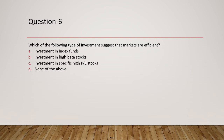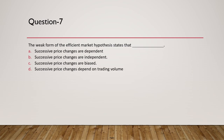Question 6: Which type of investment suggests that markets are efficient? Options include investment in high beta stocks, investment in specific high P/E stocks, investment in index funds, or none of the above. High beta and high P/E stocks suggest seeking excess returns, which contradicts EMH. Investment in an index fund — mimicking the market — is consistent with market efficiency. The answer is C — investment in index funds.